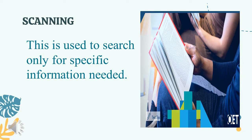The second technique is scanning. It is used to search only for specific information needed. Scanning a text means looking through it quickly to find specific information. This is commonly used in everyday life — for example, when looking up a word in a dictionary or finding your friend's name in the contacts directory of your phone. You don't need to get the main idea; you are just locating specific info or details.